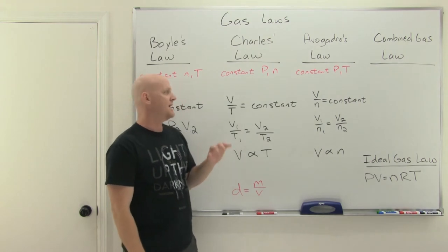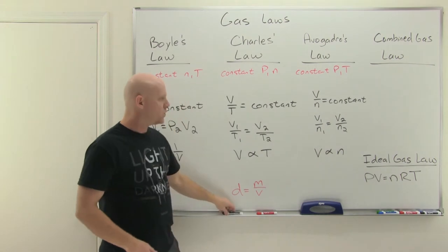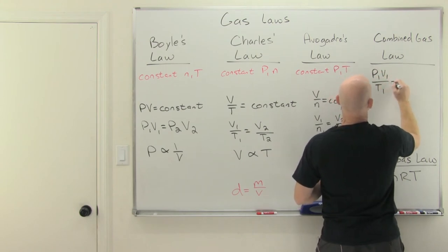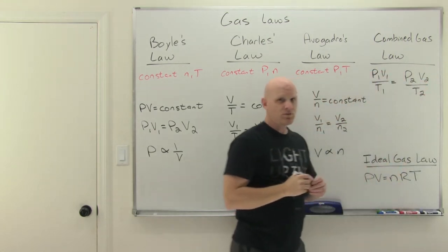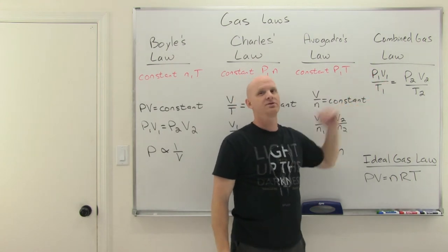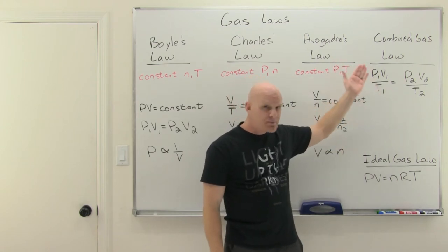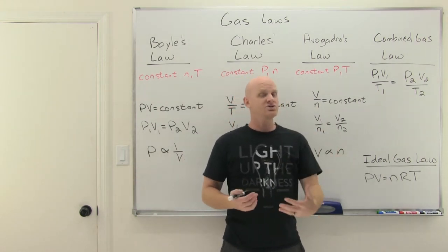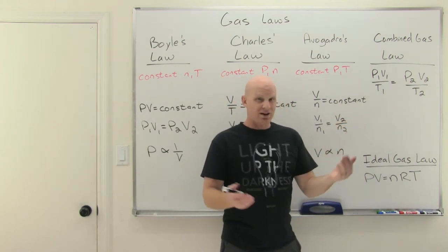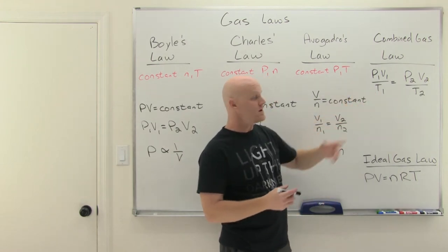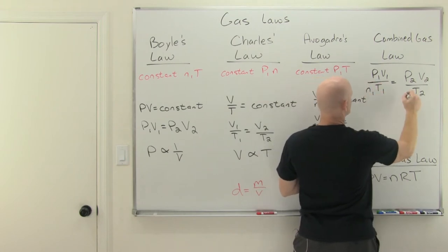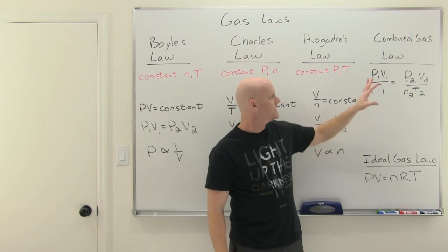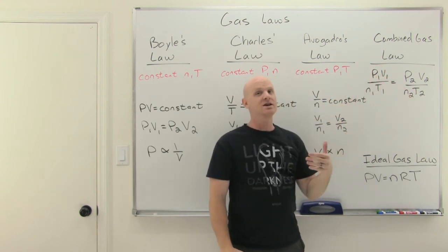Volume is directly proportional to temperature. Now if you take all of these at the same time and want to compare all variables, we can do that with what we call the combined gas law: P1V1 over T1 equals P2V2 over T2. But notice, to use this combined gas law you have to hold the number of moles of gas constant — which just means you're using a set sample of a gas, not adding any more or taking any out. However, if a question involves actually adding or removing gas, you need a little more — what I call the better combined gas law, which includes N1 and N2. Now you can factor in any change, even a change in the number of moles of gas.